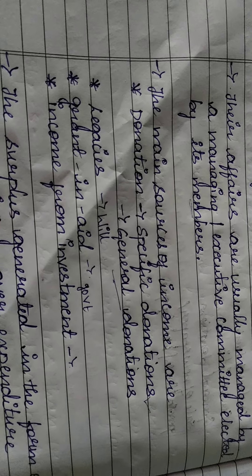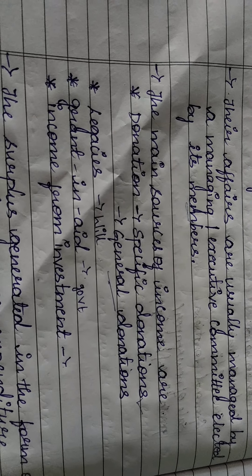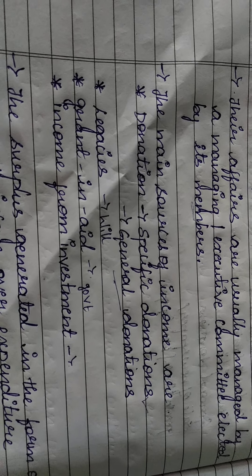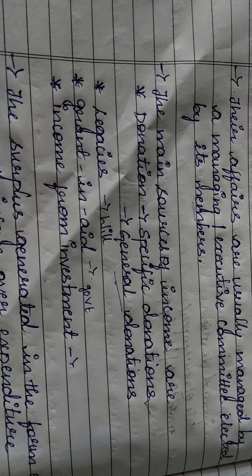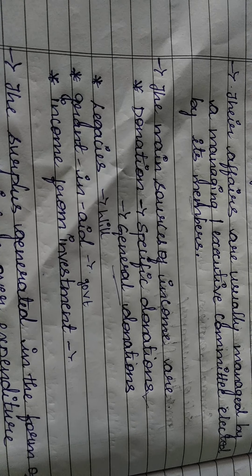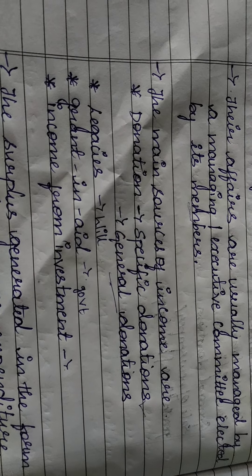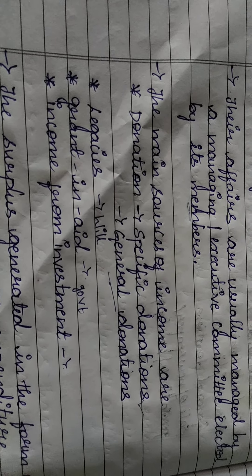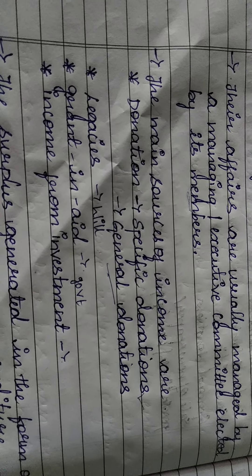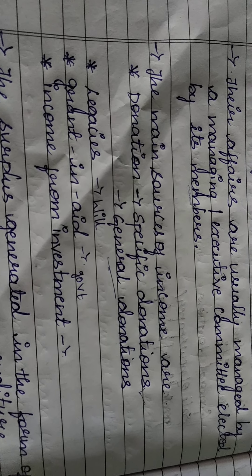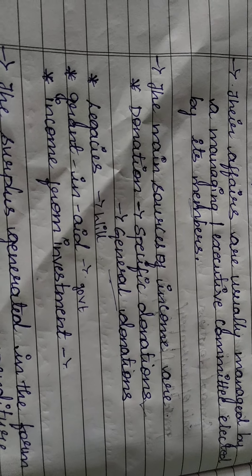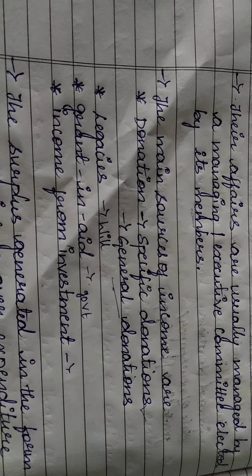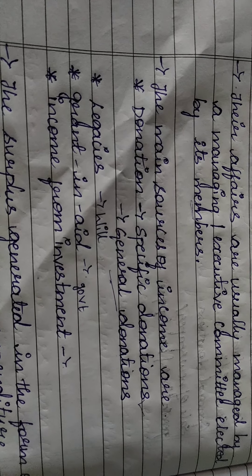Another source is legacies — some rich people write their will, and when they have property, they may write that the property belongs to a trust or charitable institution. That is nothing but legacies. Grant-in-aids are grants provided by governments to trusts or charitable institutions. Income from investment means the organization invests some amount in business activities and uses any earned income for trust activities.